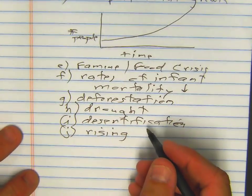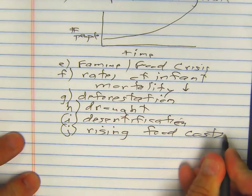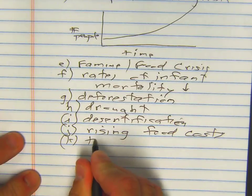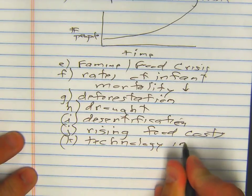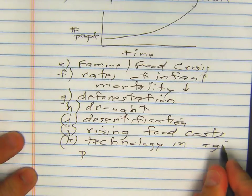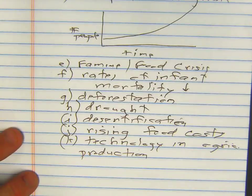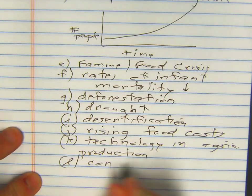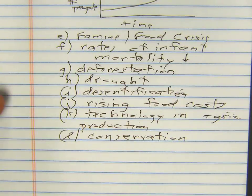Something else to think about is rising food costs. You economics experts might be familiar with supply and demand — food becomes more scarce, prices are going to go up. Basically, we've got technology that has greatly helped agricultural production, but we also need to tie this in with conservation. Do we waste food? Something you can ask yourself: do I waste a lot of stuff? Are there things I could be saving that I'm not?